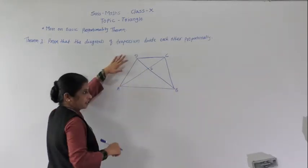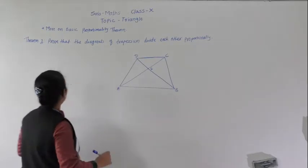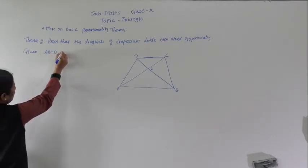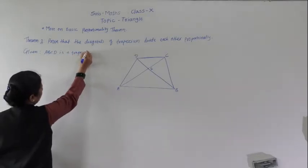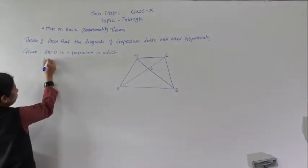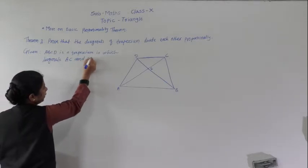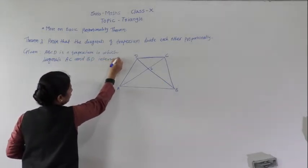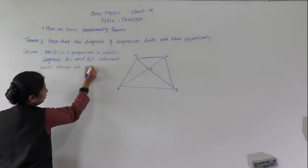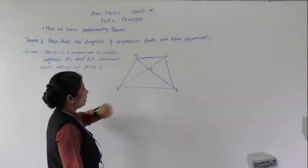Given: ABCD is a trapezium in which diagonals AC and BD intersect each other at point E. To prove: the diagonals of the trapezium divide each other proportionally, i.e., BE upon ED equals CE upon EA.